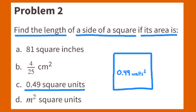If the area of a square is 49 hundredths square units, or 0.49 square units, then the side lengths must be 7 tenths, or 0.7, because 0.7 times 0.7 equals 0.49.